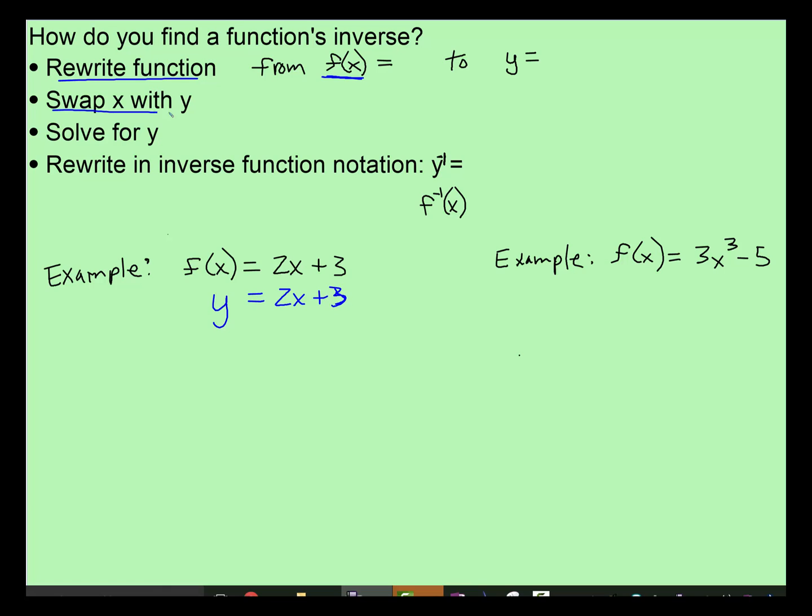Then the second step, swap the x's and the y's, not the signs. So if there's a negative sign anywhere, don't worry about that. You're just swapping the x's and y's. So there's a y, so I'm going to put an x in its place. There is 2x, so I'm now going to put 2y plus 3.